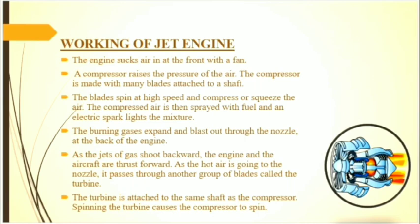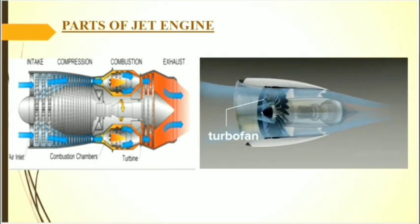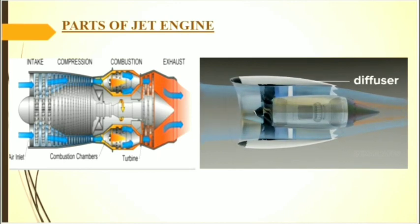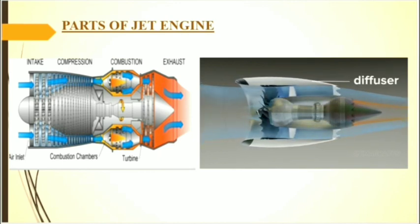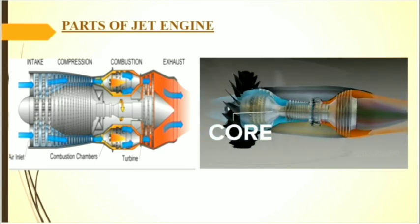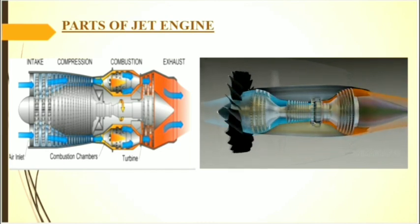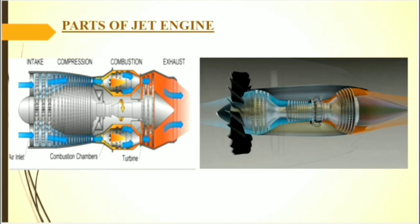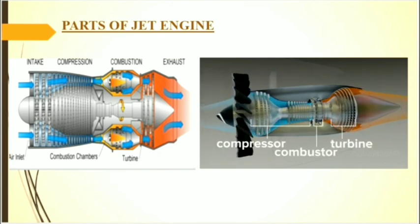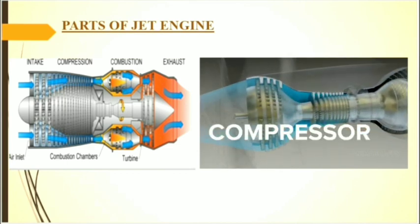The inlet duct is the opening in front of the aircraft that allows outside air to enter the engine. The compressor compresses the air and makes the flow much more powerful. Compression happens in stages, forcing incoming air into increasingly inner chambers. A row of rotating blades and stator vanes is called a stage.